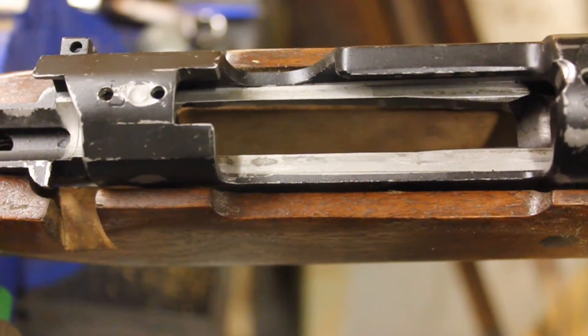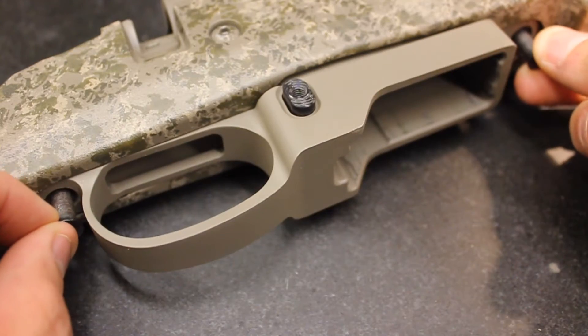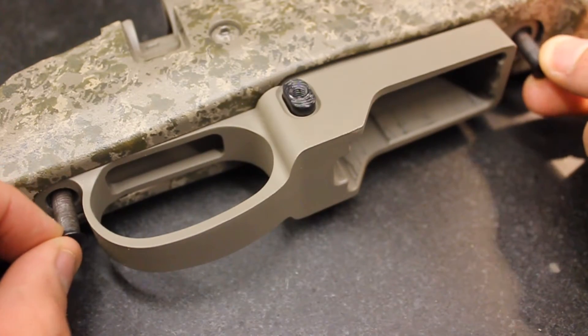And of course, the action screws would not be able to take the repetitive recoil of a rifle without bending, breaking, or eventually wearing big holes in the rifle's stock.